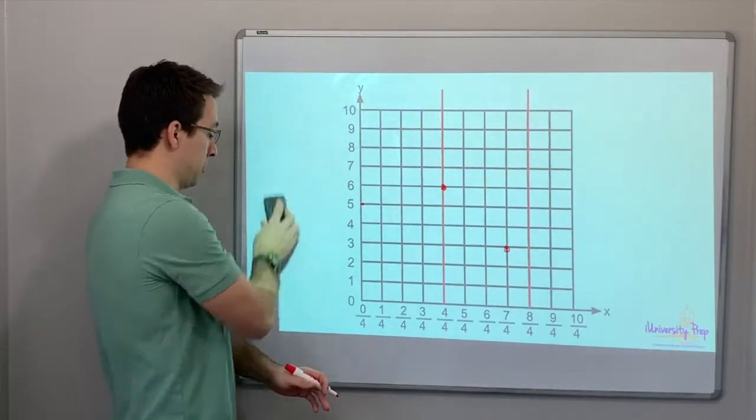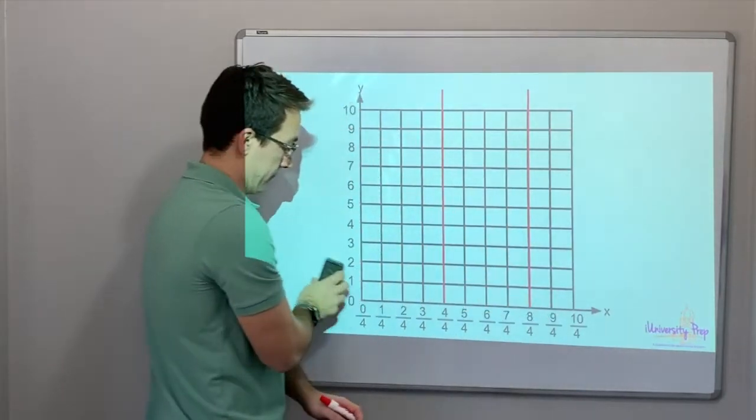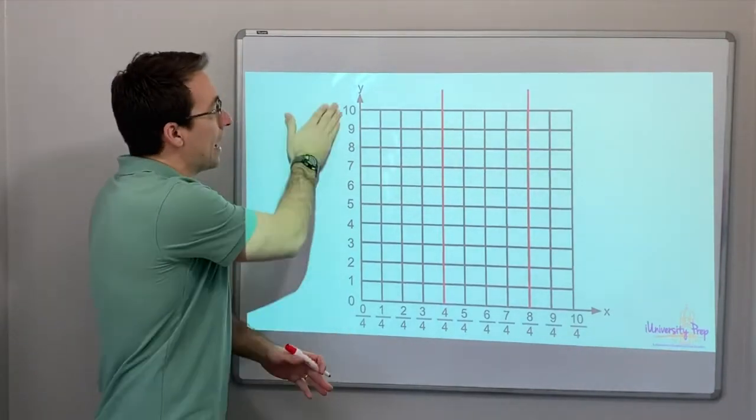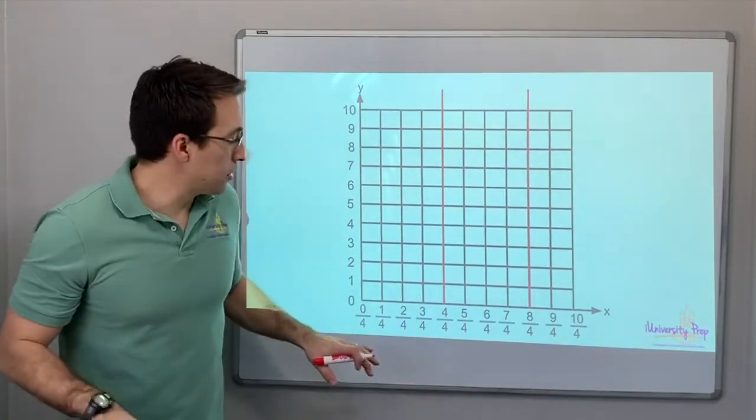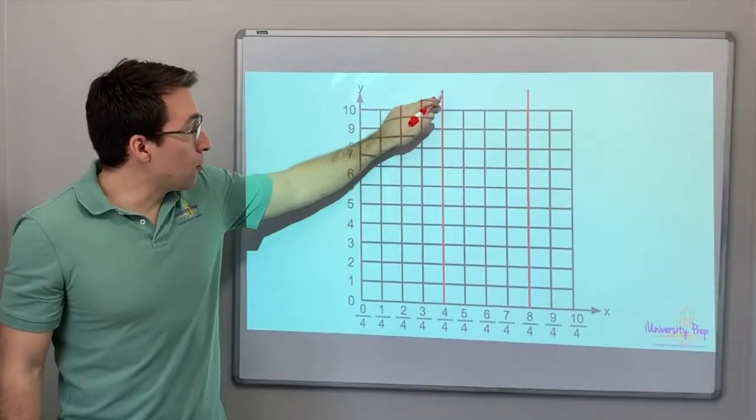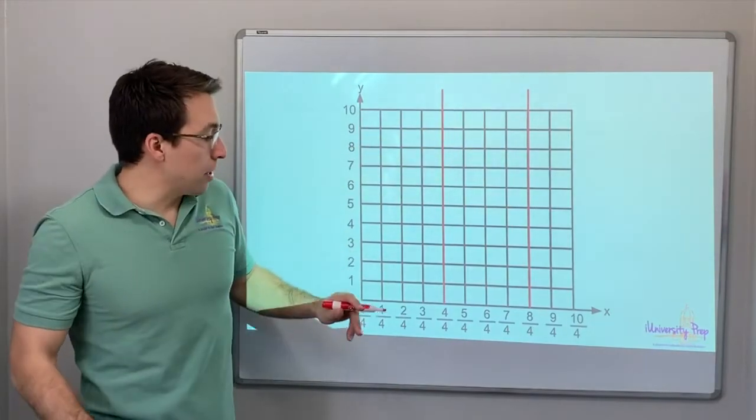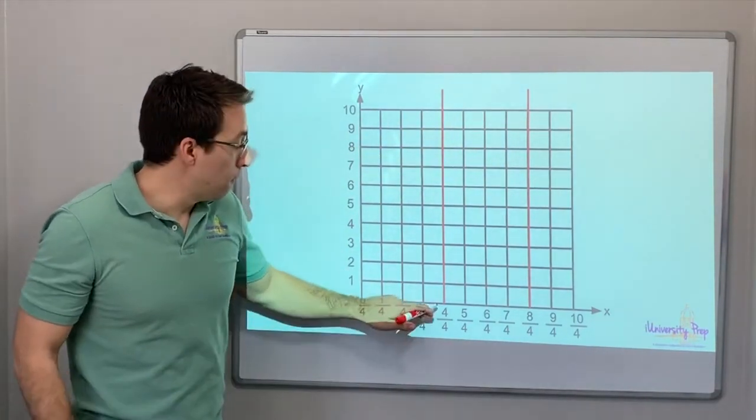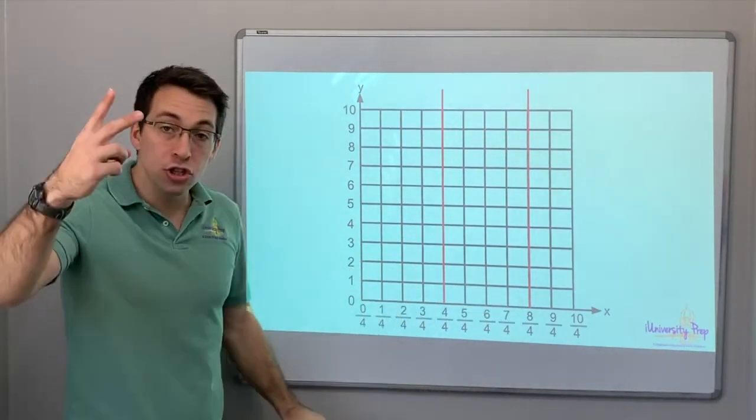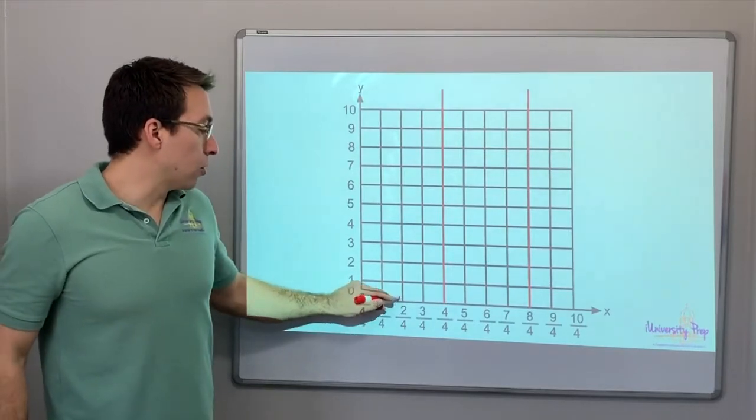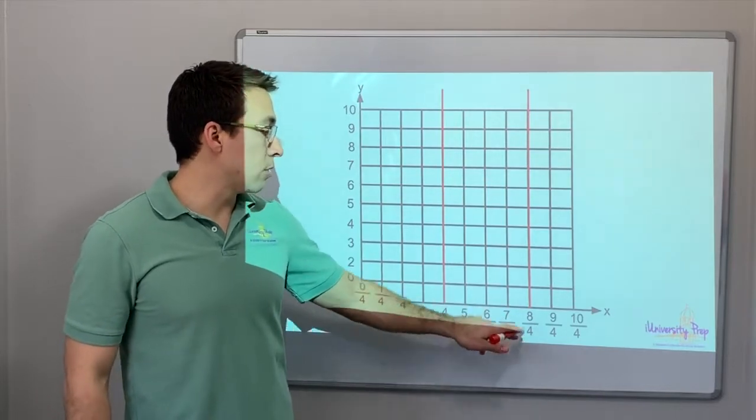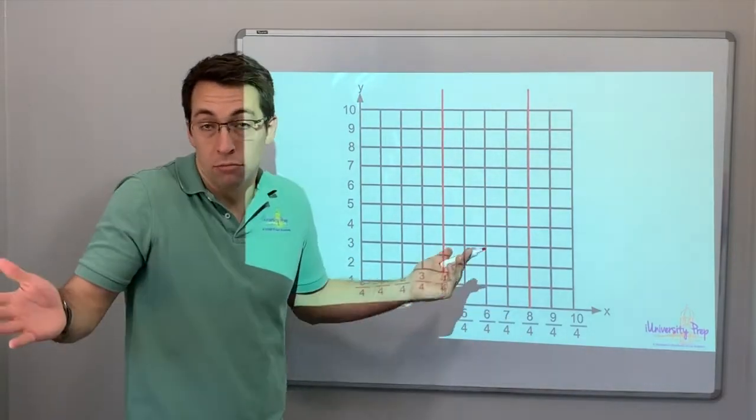Now, let me show you. Oh, goodness. Now we have fractions on the bottom. Right? So I just left the y-axis normal whole numbers, but on the x-axis, we added fractions. So the red line is showing our whole numbers. 4 fourths is 1, 8 over 4 is 2. So look, this is by quarters. 1 quarter, 2 quarters, 3 quarters, 4 quarters, 5 quarters, 6 quarters, 7 quarters, 8 quarters. No problem.